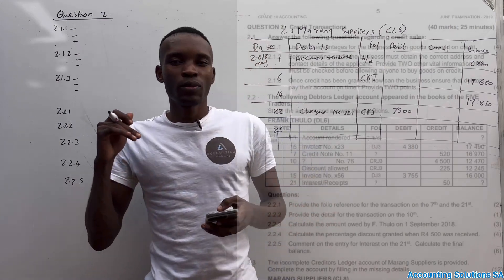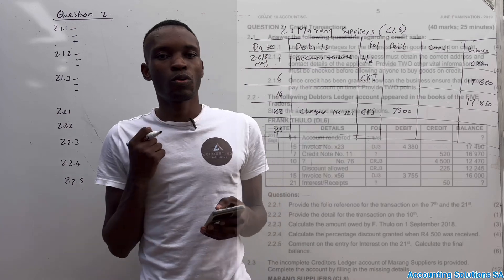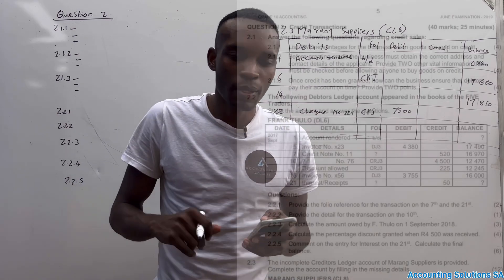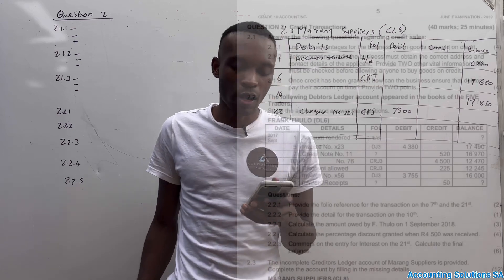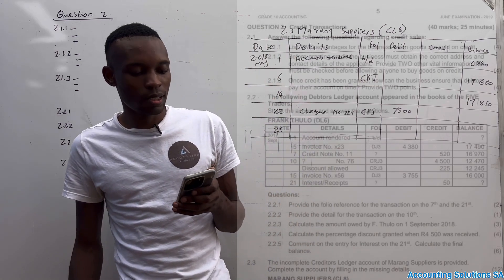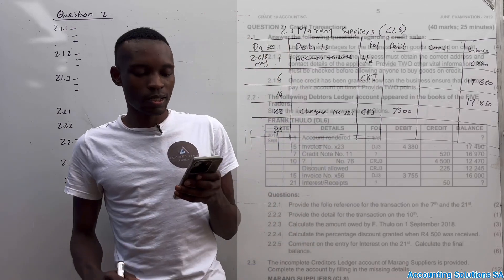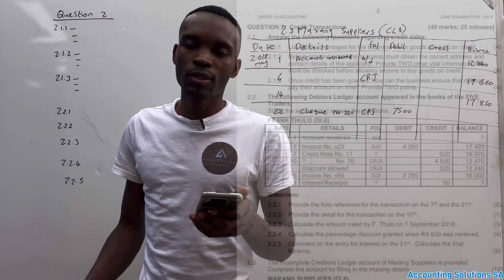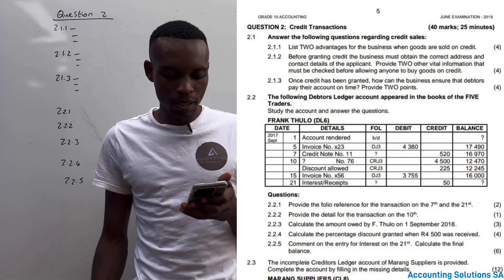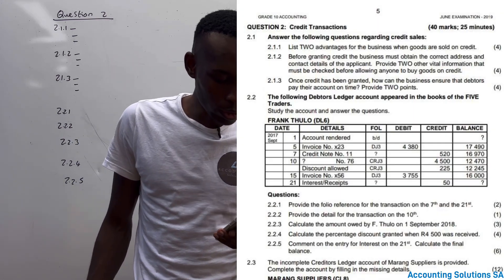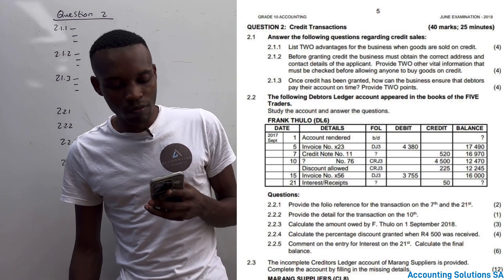Hi Grade 10 students. In this video we're going to do Chapter 1 of Term 2. The question paper I picked is from an examination written around June 2019. This topic is all about credit transactions, and we are going to deal with debtor and creditor transactions. It was Question 2, worth 40 marks, with a time requirement of only 25 minutes.